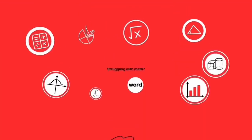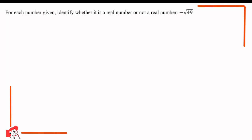Welcome to the Goth Math class — let's make math so easy! Here is the question: for each number given, identify whether it is a real number or not a real number. The number is minus the square root of 49. This question wants us to tell whether this is a real number or not.